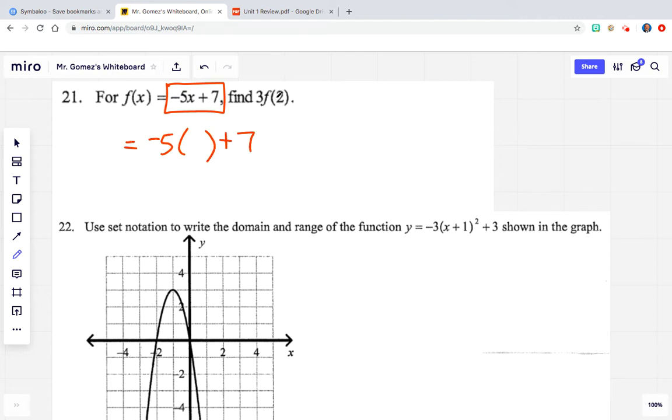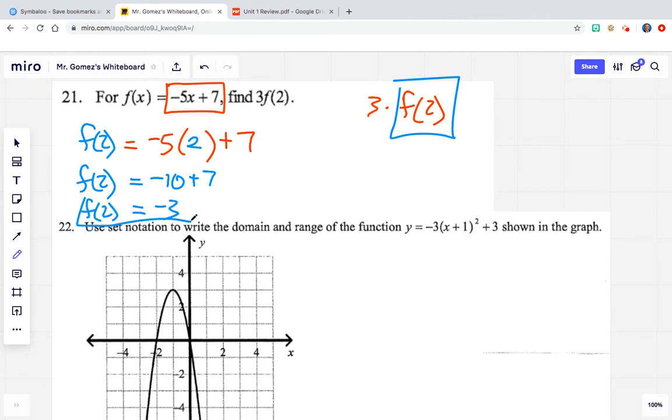And in this problem, we're being asked to find what is 3 times f of 2. So let's go ahead and find f of 2 first, and whatever we get, we're going to end up multiplying by 3, and then we'll be done. So f of 2, we're going to use this function, and we're going to put 2 in where x goes. That's what f of 2 is looking for. So negative 5 times 2 is negative 10. We're going to add 7.